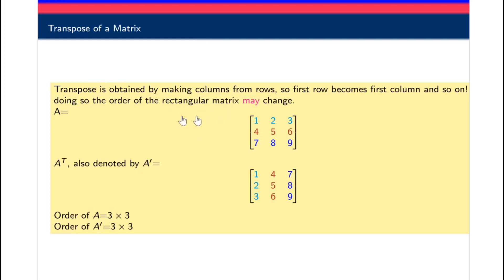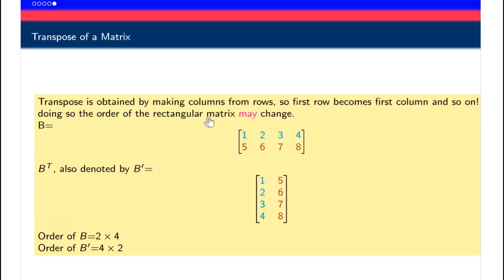The next concept is the transpose of a matrix. For example, take matrix A — a simple matrix with values one through nine. If you make the first row the first column, the second row the second column, and the third row the third column, the resulting matrix is called the transpose, denoted A-transpose, A-dash, or A-prime. If A has an order of two by four, its transpose will have an order of four by two.